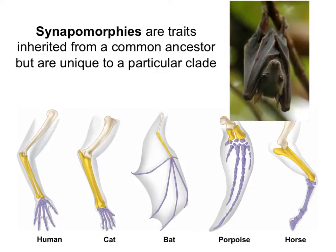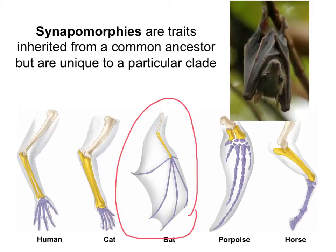Now let's say that instead of looking at just the presence of the forelimb, we're looking at a forelimb that is shaped as a wing. Is having your forelimb shaped into a wing something unique to bats? Yes, because the forelimbs of other mammals are not shaped as wings. So having a forelimb shaped as a wing is a synapomorphy of bats, and we can use this to distinguish bats from any other mammal.